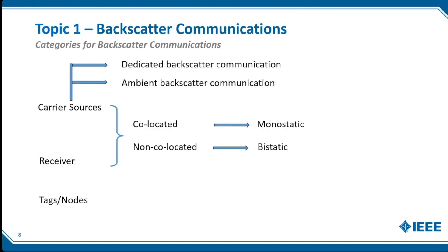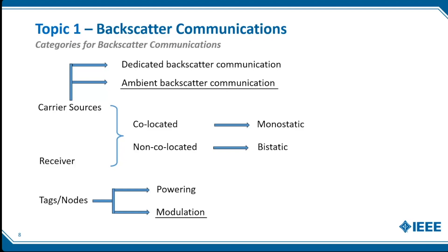We can also categorize by the carrier source: if we dedicate a generated source — normally a continuous sine wave — we call it a dedicated backscatter system; if we opportunistically use ambient wireless signals such as Wi-Fi or FM, we call it an ambient backscatter system. We can further categorize by the tag's power strategy — semi-passive or passive — and by different modulation types applied to the backscatter signals. This paper primarily focuses on ambient backscatter and different modulation approaches.